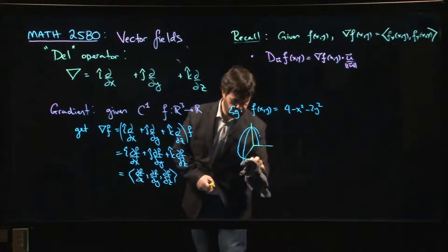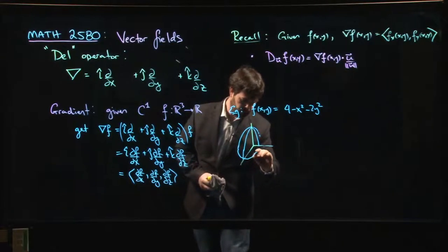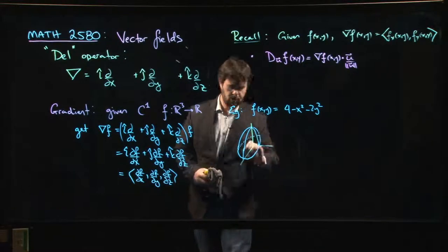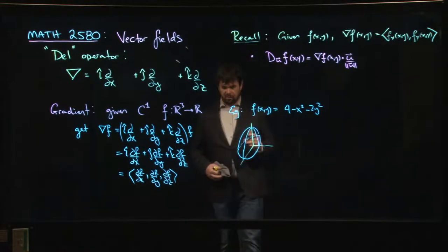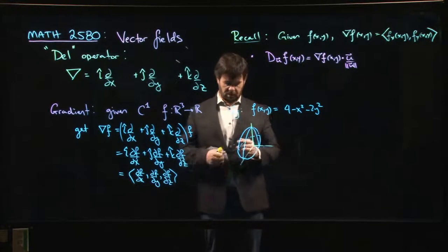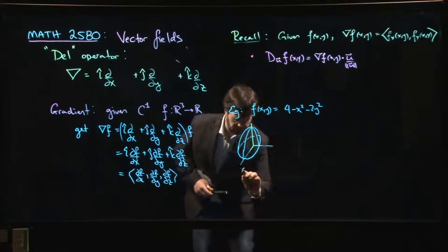And we get these kind of elliptical cross sections. So we get something that looks like this. It's an elliptical paraboloid opening downwards, so we get this sort of object. The graph would look something like this.